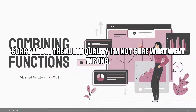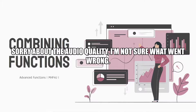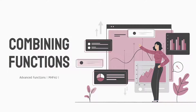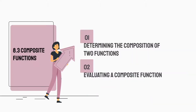Hello everybody and welcome to Advanced Functions. Today we're going to be doing Chapter 8.3, which is still part of combining functions. We're actually going to be learning about the last way to combine functions, which is called Composite Functions. We're going to discuss what a composite function actually is, determine how to find the composition of two functions, how to evaluate the composite of a function, and other key concepts you must familiarize yourself with for this chapter.